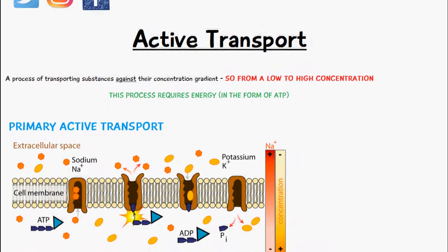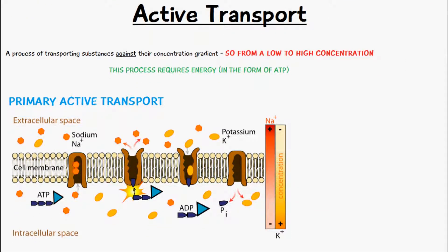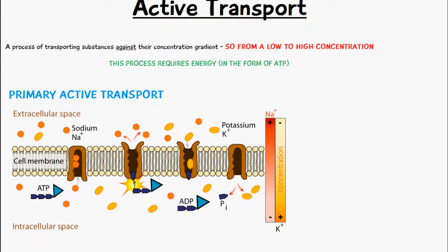There are two types of active transport. I'll be talking about the first type in this video: primary active transport. The second one is secondary active transport. For primary active transport, I'm going to use the example of the sodium-potassium pump, which is present in almost all animal cells and is very common.